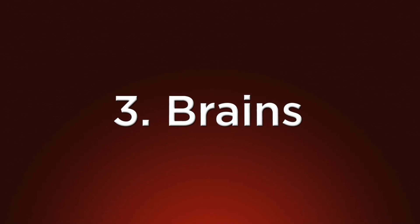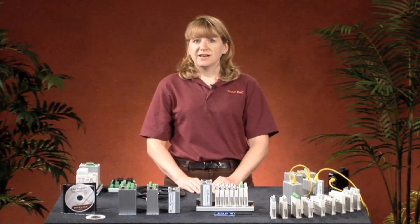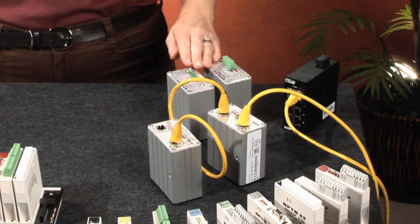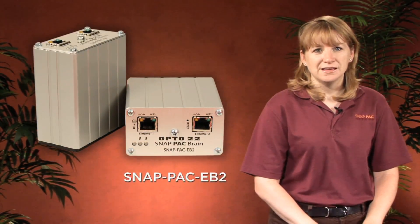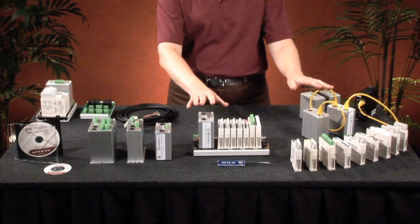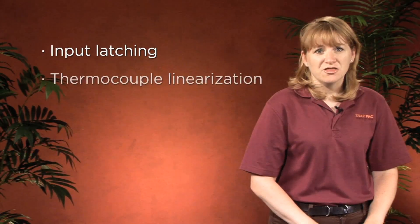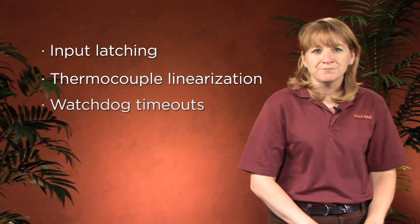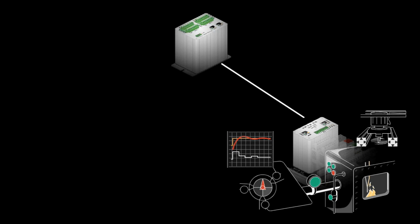The third part of the SNAP PAC system is brains. We call our I/O processors brains because they provide a lot of distributed local intelligence and control. SNAP PAC brains are available with Ethernet networking or RS-485 serial networking. There are two Ethernet-based brains: the SNAP PAC EB1 and the SNAP PAC EB2. The EB1 supports high-speed digital functions while the EB2 does not, but both handle analog, digital, and serial I/O. Both support input latching, thermocouple linearization, watchdog timeouts, analog clamping and scaling, PID control, and much more. All of these functions are performed at the brain level, freeing up your main PAC controller for other tasks.